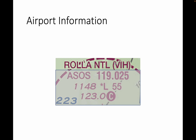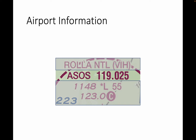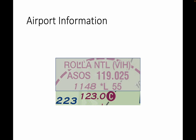Here's another example: Rolla National Airport, symbol VIH. In this case, we don't have control tower information, but we do have weather information. ASOS is the weather information for this airport — another automated weather service — with the frequency shown. The elevation at VIH is 1,148 feet above mean sea level. Again we have limited lighting, shown by the star on the L. The longest runway is 5,500 feet. The bottom line tells us the CTAF frequency: 123.0, shown with the round circle with the C inside. It does not have a control tower, so we see the CTAF frequency but no control tower frequency.